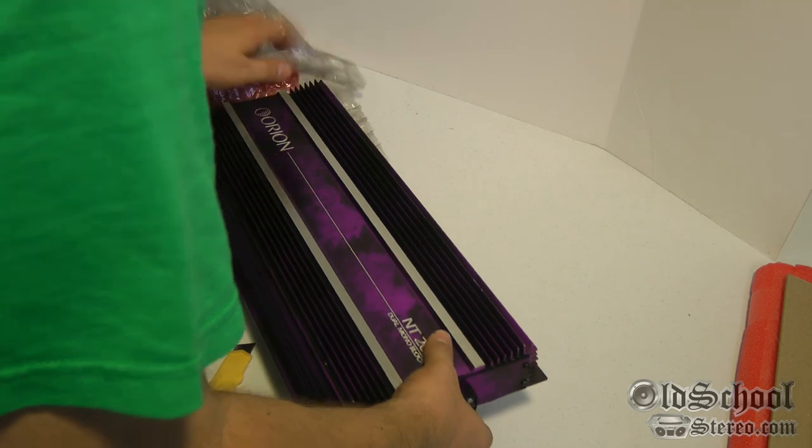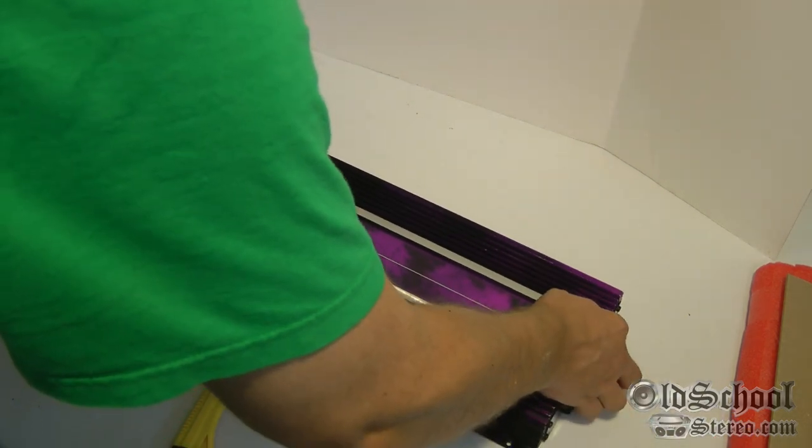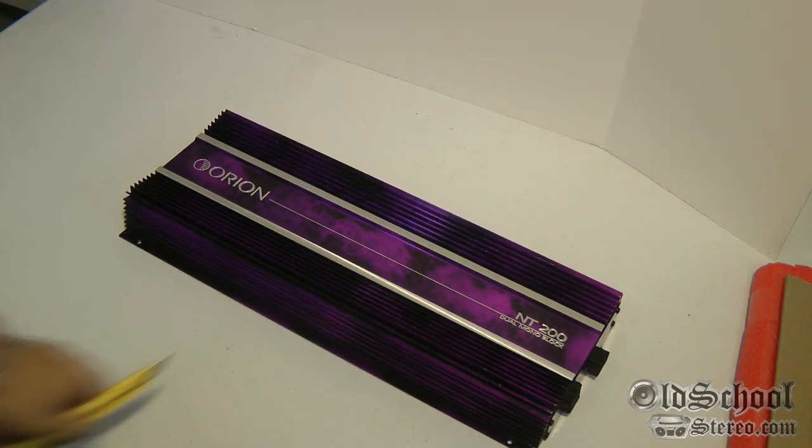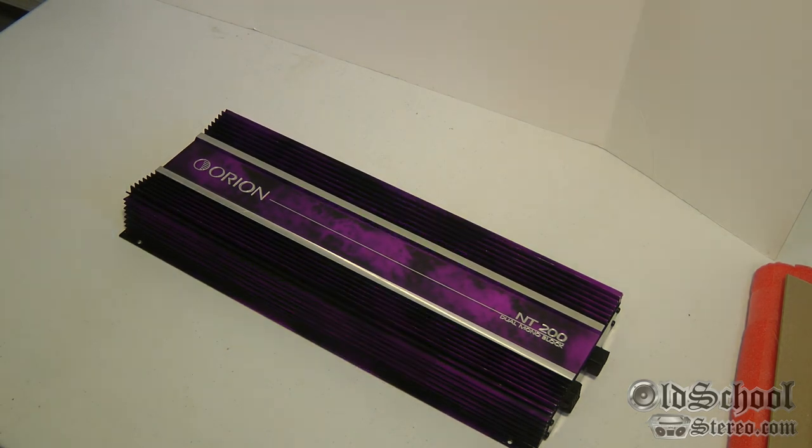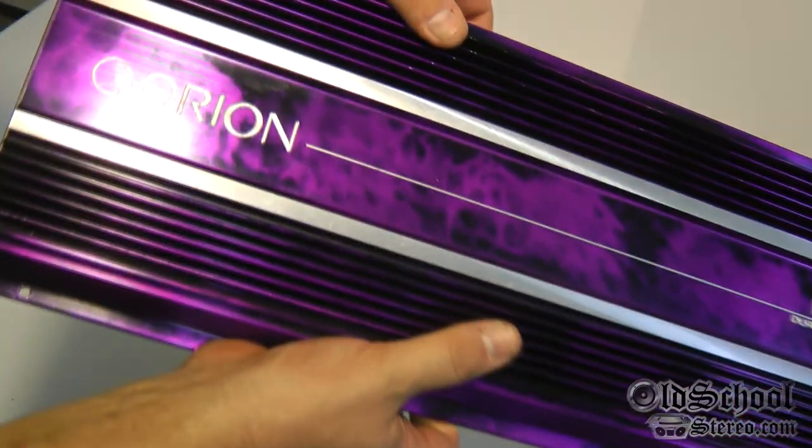There we go! Whoa, look at what we have here. An Orion MT-200 dual mono block. Purple - that is beautiful.